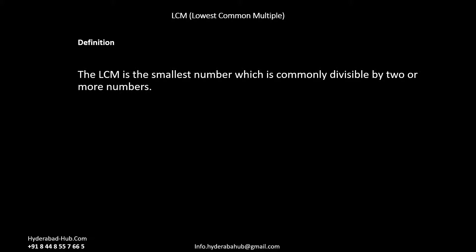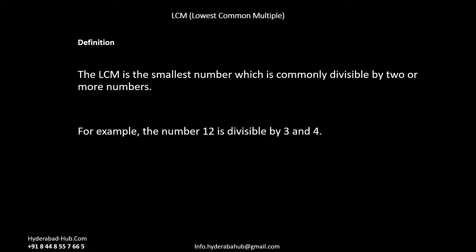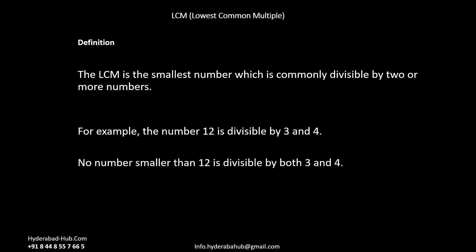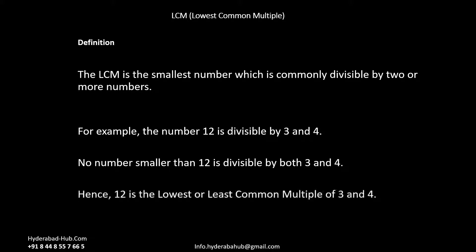LCM — Lowest Common Multiple. You must know how to get the LCM of two or more numbers to solve many questions in quantitative aptitude. The LCM is the smallest number which is commonly divisible by two or more numbers. For example, 12 is divisible by 3 and 4, and no number smaller than 12 is divisible by both 3 and 4, hence 12 is the lowest common multiple of 3 and 4.